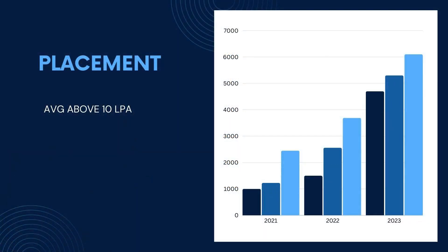Regarding placements, we have no official data, but based on feedback from students, the minimum package starts from 8 to 9 lakhs and can go up to 30 to 35 lakhs. The average package from this university is approximately 10 lakhs per annum.